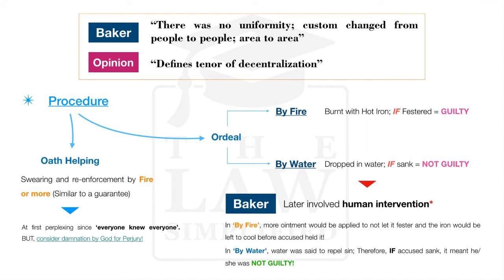Custom changed from people to people and area to area. This non-uniformity is the real reason why even today we see an evolution of the United Kingdom in terms of its justice, legal systems, and governance, as opposed to many other countries that have had breaks in their history and had to rewrite their constitutions. As a by-product, if you are studying constitutional law, you'll understand that the UK has an unwritten constitution — it does not have one solid document but is made up of several different sources. This could be seen as one of the first indicators of why the UK is the way it is today.